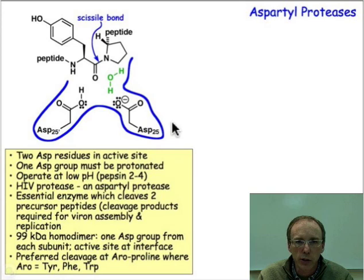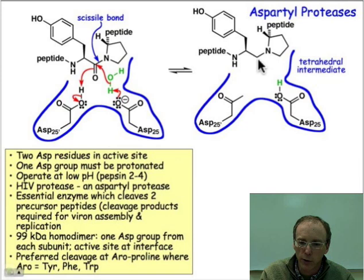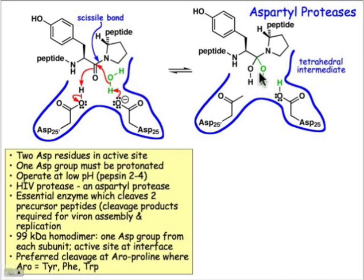Water is going to add in to this peptide bond, and so we're going to use the general base to activate that nucleophilic addition, and then we're going to use the general acid to protonate the oxygen of the carbonyl group. That creates what is a tetrahedral intermediate.